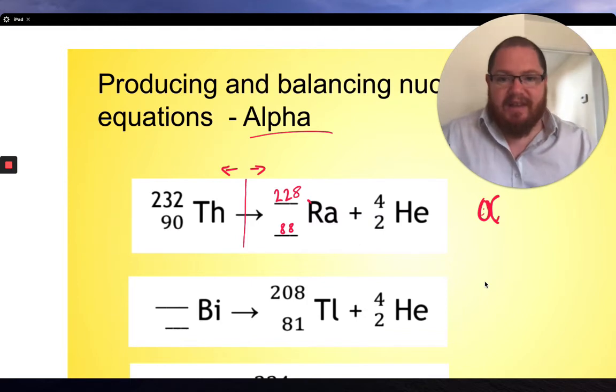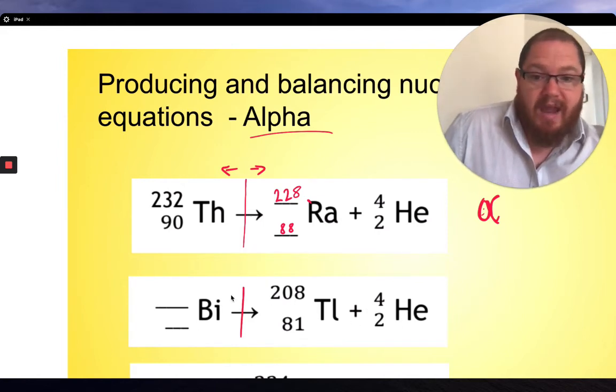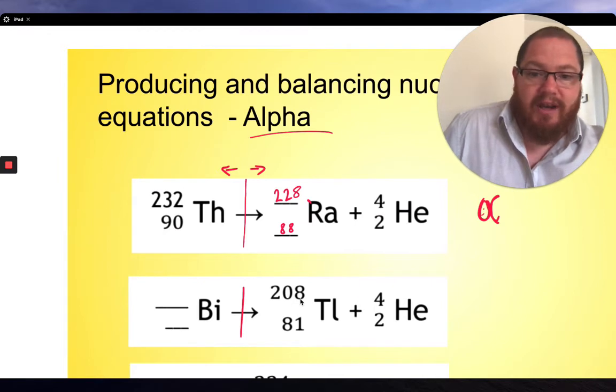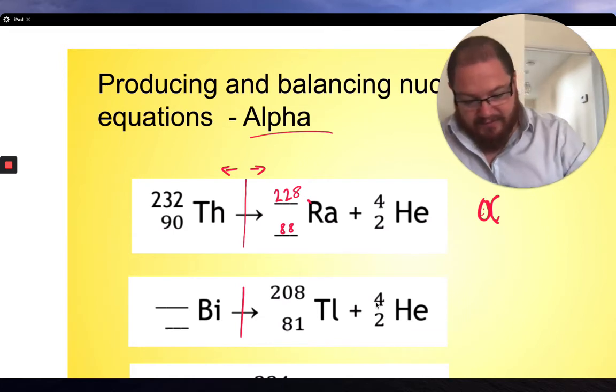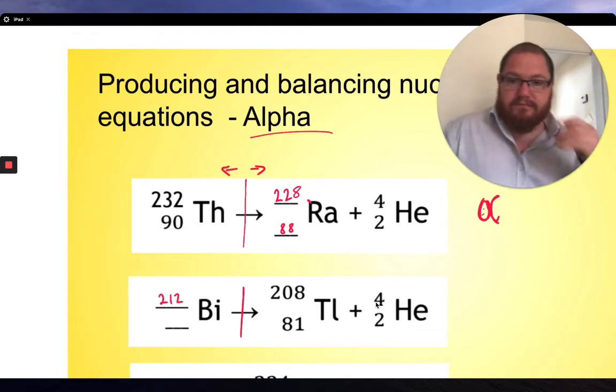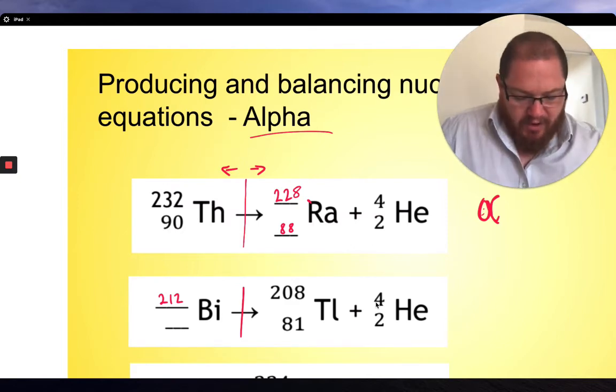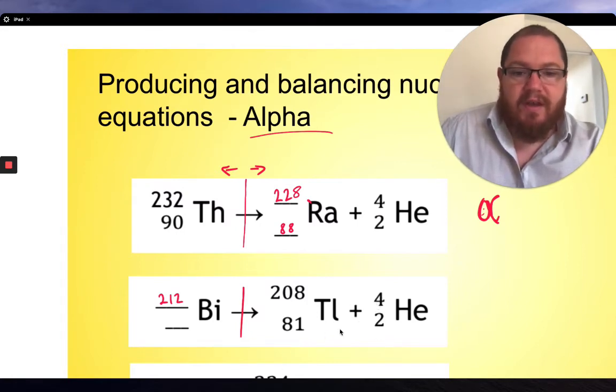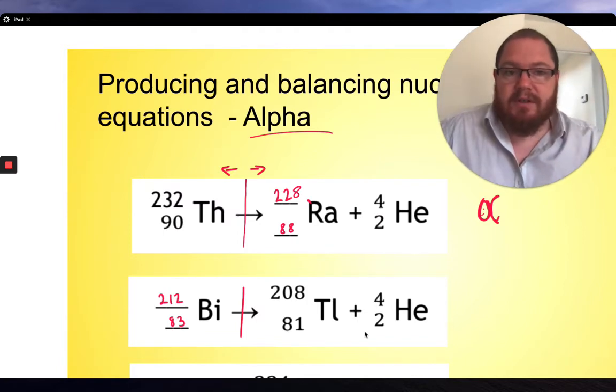Let's try another one where it's slightly different because now, if I draw a line there, you can see that we don't know what's happening in this side. But we have got some numbers this side. So, everything this side has got to equal everything that side. 208 plus four is going to give me 212. So I guess, I think this is bismuth. 212 is going to give me 208 plus four. Does that make sense? And then I've got the atomic numbers here. 81 plus two is equal to this. So what is 81 plus two? It's 83. So bismuth is the 83rd element in the periodic table.